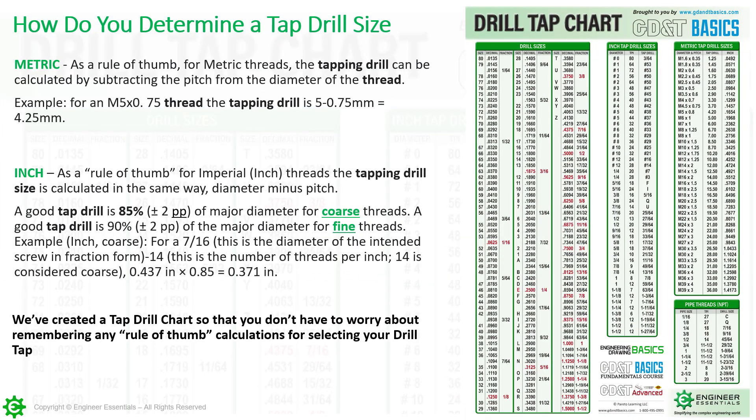How do you determine a tap drill size? There are rules of thumb you can use. For metric, we simply take the basic diameter — for example M5 — and subtract the pitch from it; that gives us the tap drill size. For inch, we have the good tap drill formula: 85% for coarse, 90% for fine. You can go into the machinist handbook and find all the different classes of threads — class 1, 2, or 3 — to determine exactly what your tap drill size is going to be. We took all of those basic numbers from the machinist handbook and put them on this drill tap chart as a good reference.